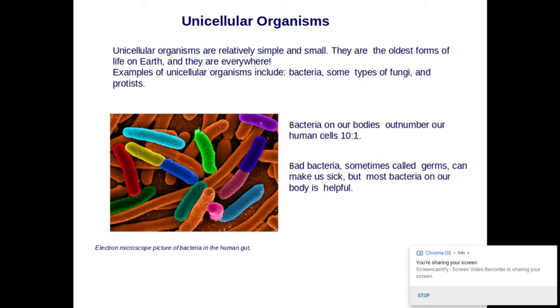Unicellular organisms are relatively simple and small. They are the oldest form of life on earth, and they are everywhere. Examples of unicellular organisms would be bacteria, some fungi, and protists. Protists live in water mainly, things like amoebas and plankton.